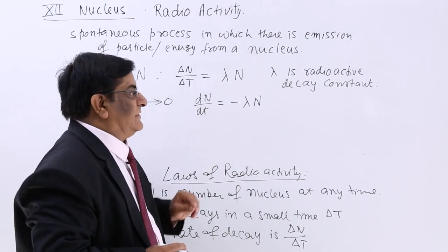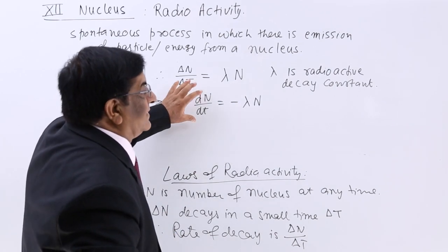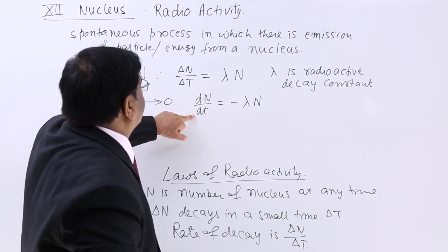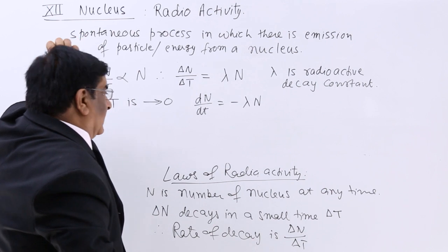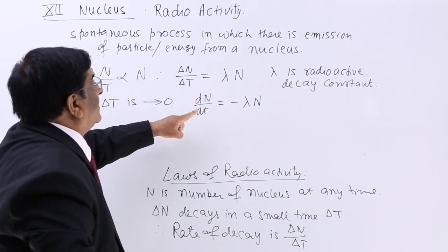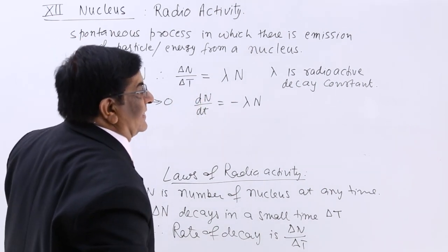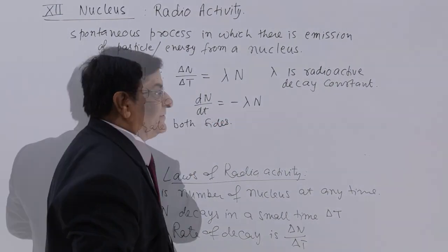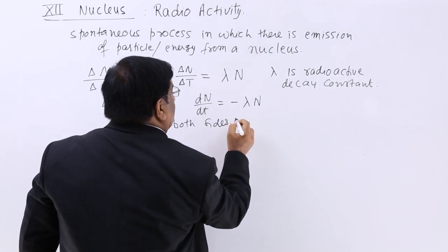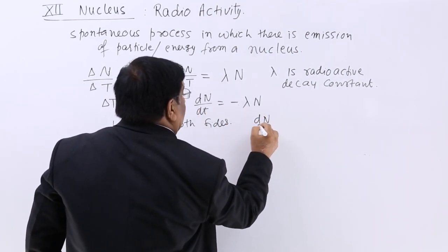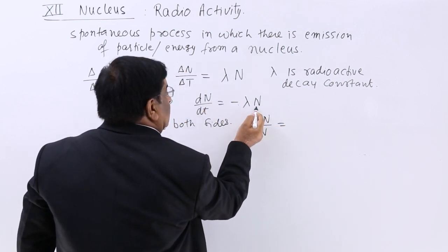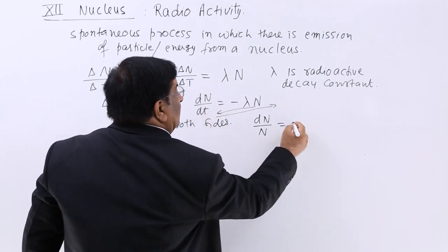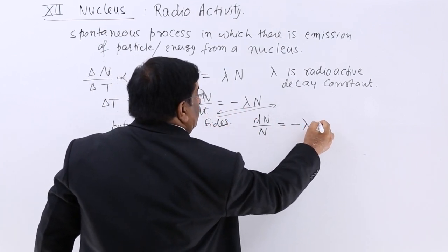At any instant, the rate of change dN/dt equals minus lambda N. This is a differential equation. To integrate it, we rearrange: dN/N equals minus lambda dt. Now we integrate both sides.